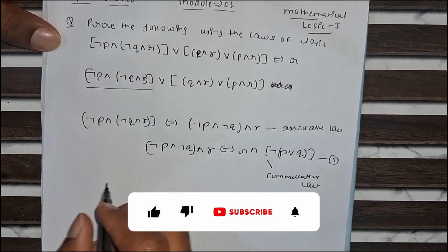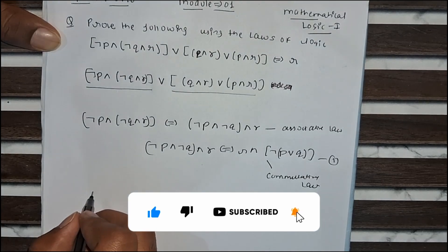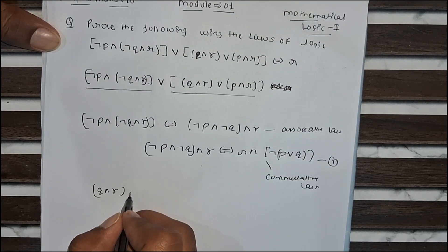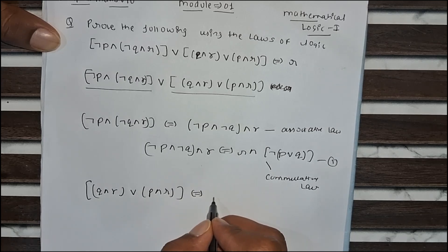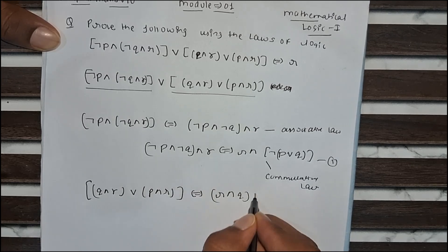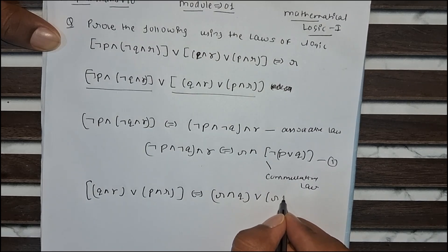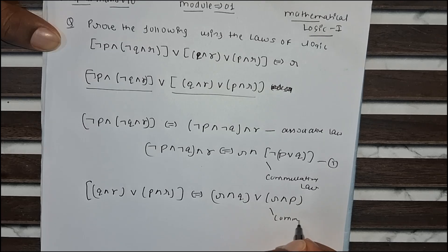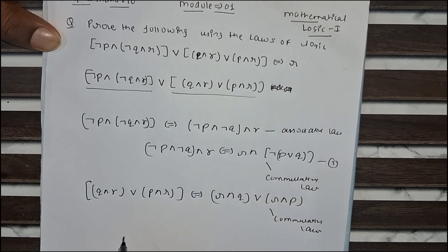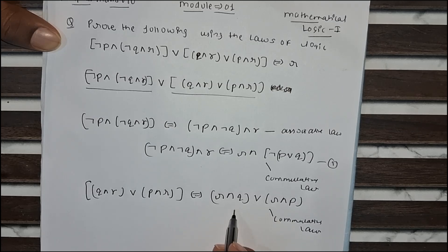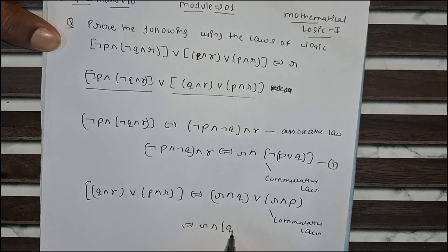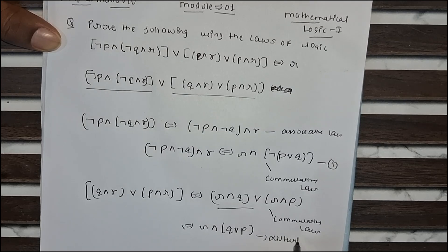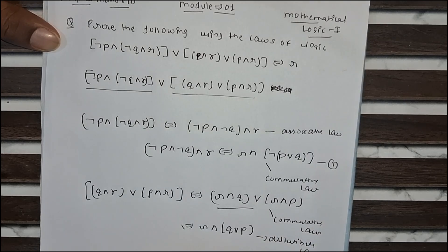Now go for the second part. This part is equivalent to Q conjunction R disjunction P conjunction R. It will become R conjunction Q disjunction R conjunction P. This also comes from the commutative law. When R is common in this expression, we take R as a common factor. The expression becomes R conjunction Q disjunction P. This expression is solved by the distributive law. This is our second equation.